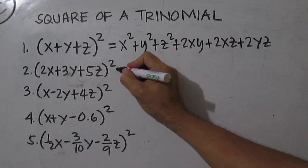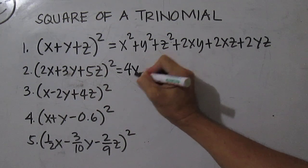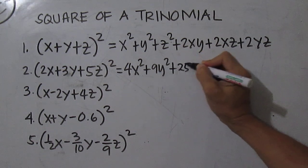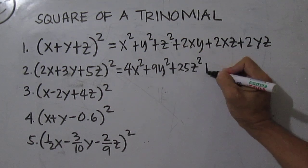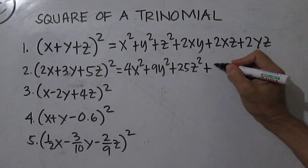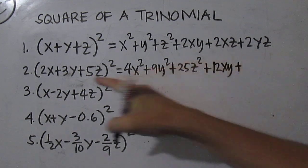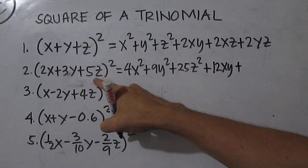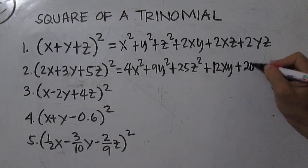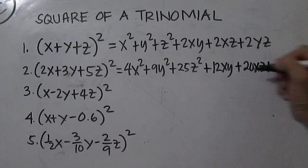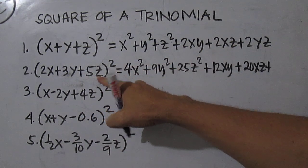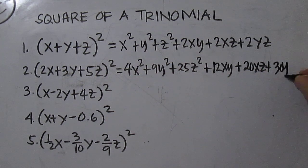For number 2, this is 4x squared plus 9y squared plus 25z squared. Then 2x times 3y is 6xy times 2 is 12xy, plus 2x times 5z is 10xz times 2 is 20xz. Plus 3y times 5z is 15yz times 2, you have 30yz.